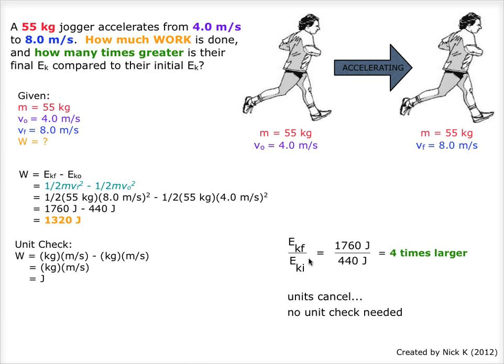To find how many times larger the final EK is than the initial EK, we must simply divide the final EK by the initial EK. We will have 1,760 joules divided by 440 joules, which will equal four times larger. So the final EK is four times larger than the initial EK.